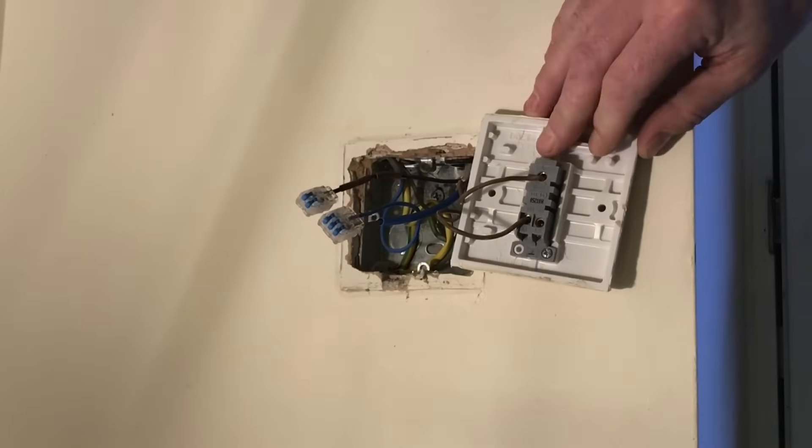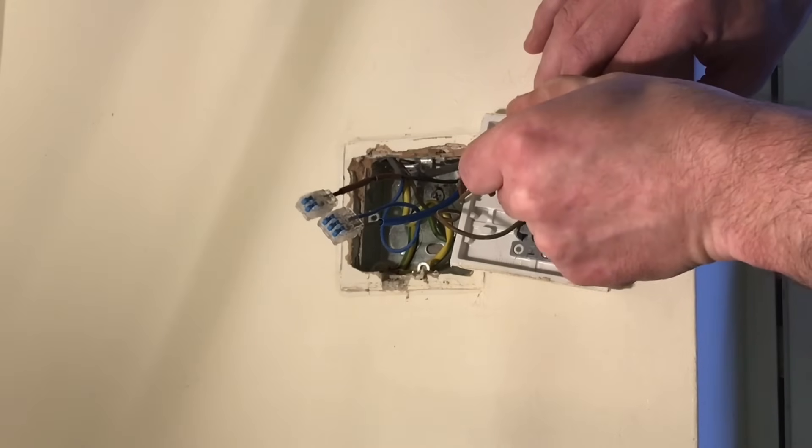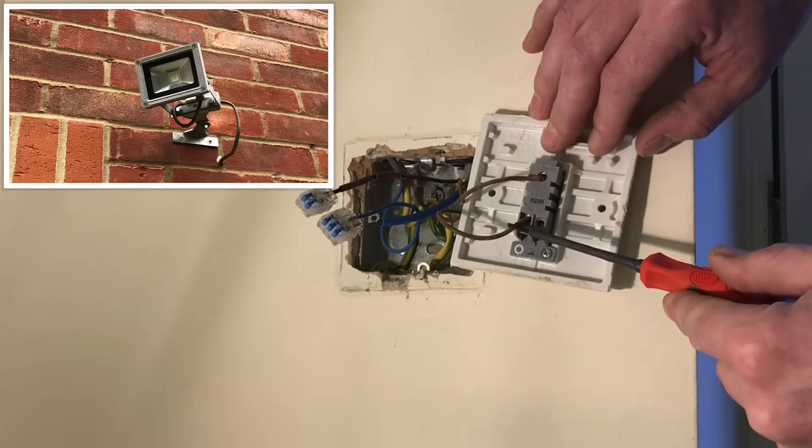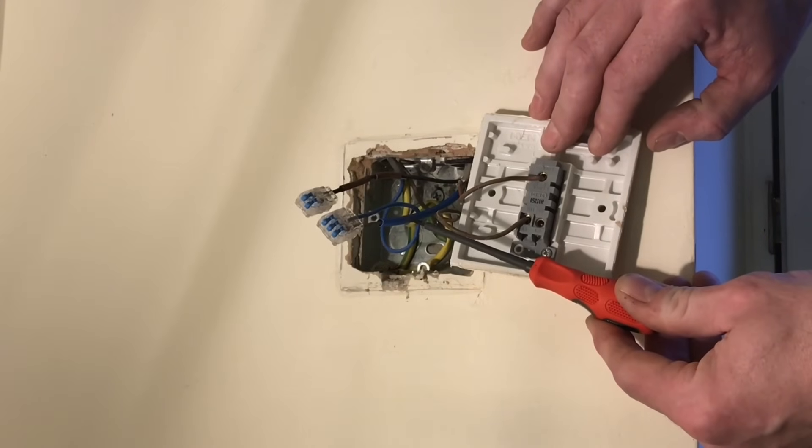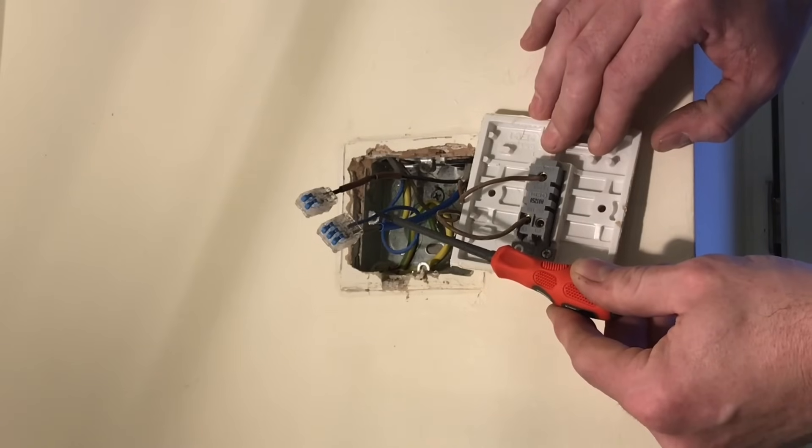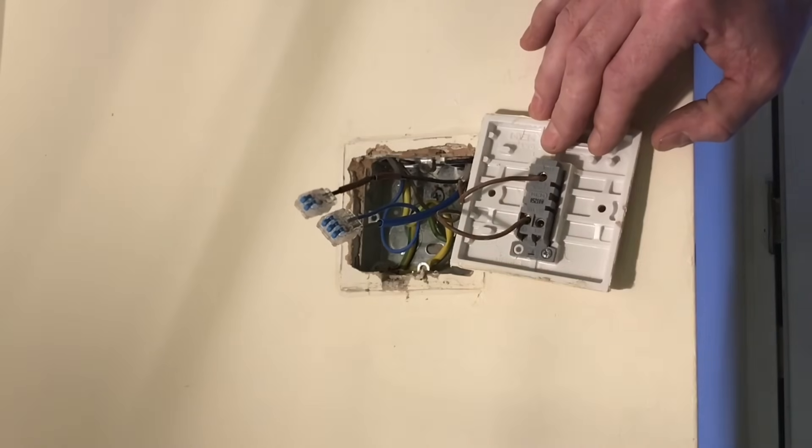So what we've got then is the top connection here in the common is the brown of the 3 core bringing in our feed. We have a twin and CPC going out to an outside light, so this is the switching line conductor. Previously saw that grey was used with blue sleeving for the neutral, so that brings our neutral in. Goes out on the blue neutral to the outside light, and once again the black conductor, which would have been a switching line on a 3 core, is actually redundant and doing nothing.